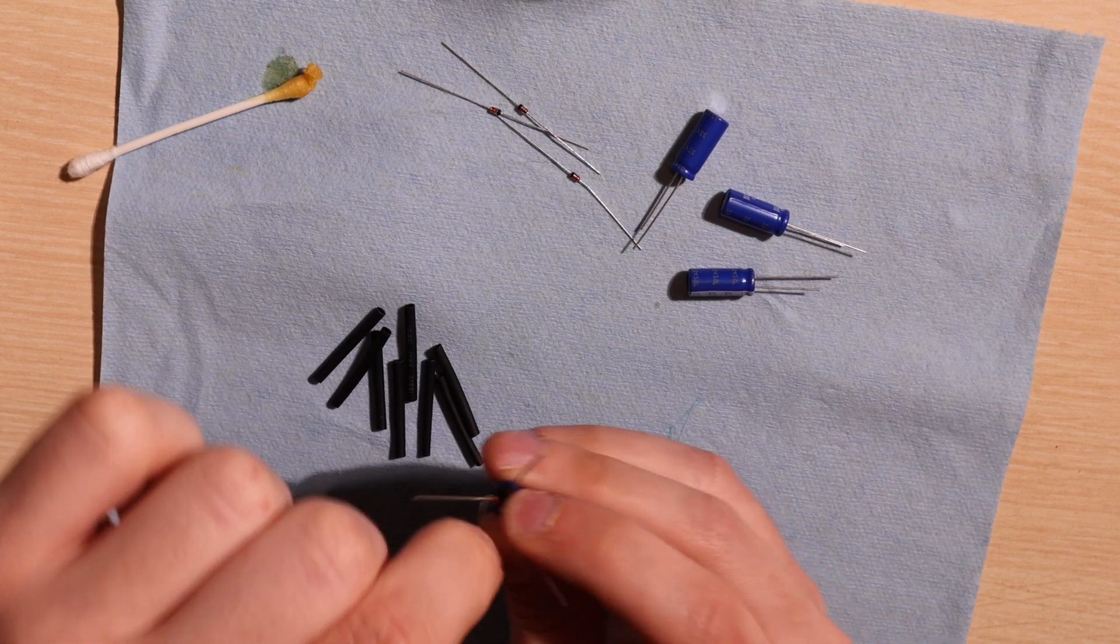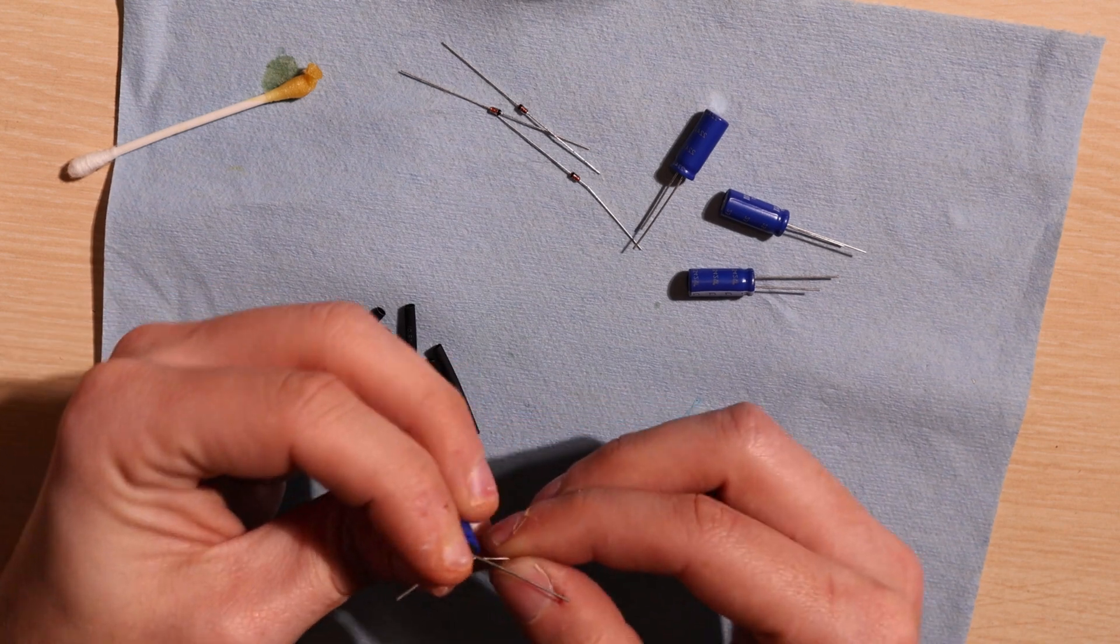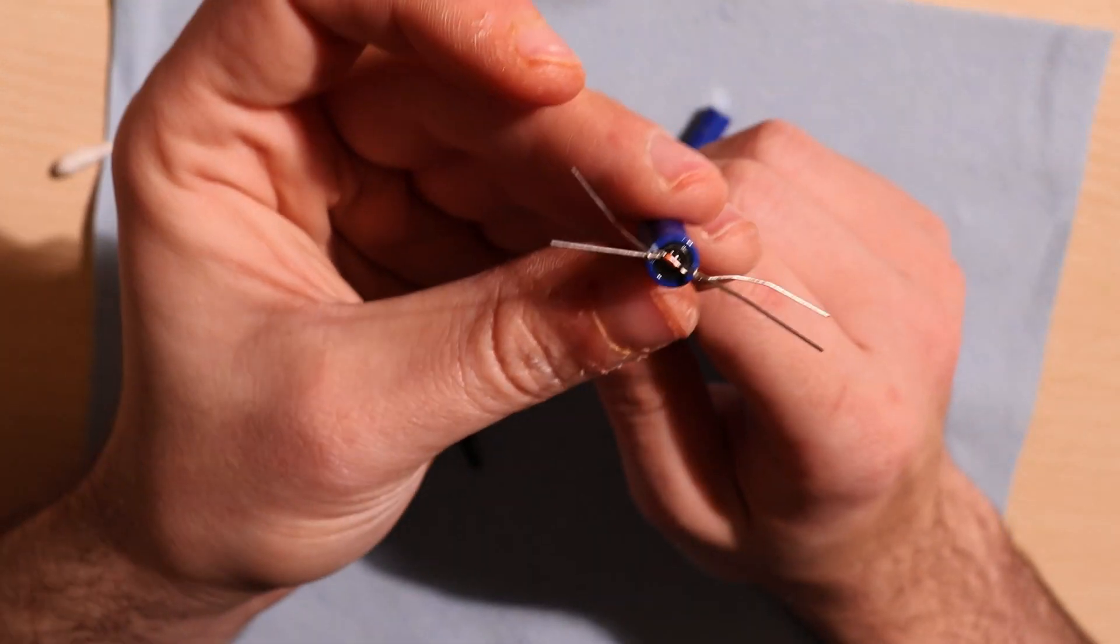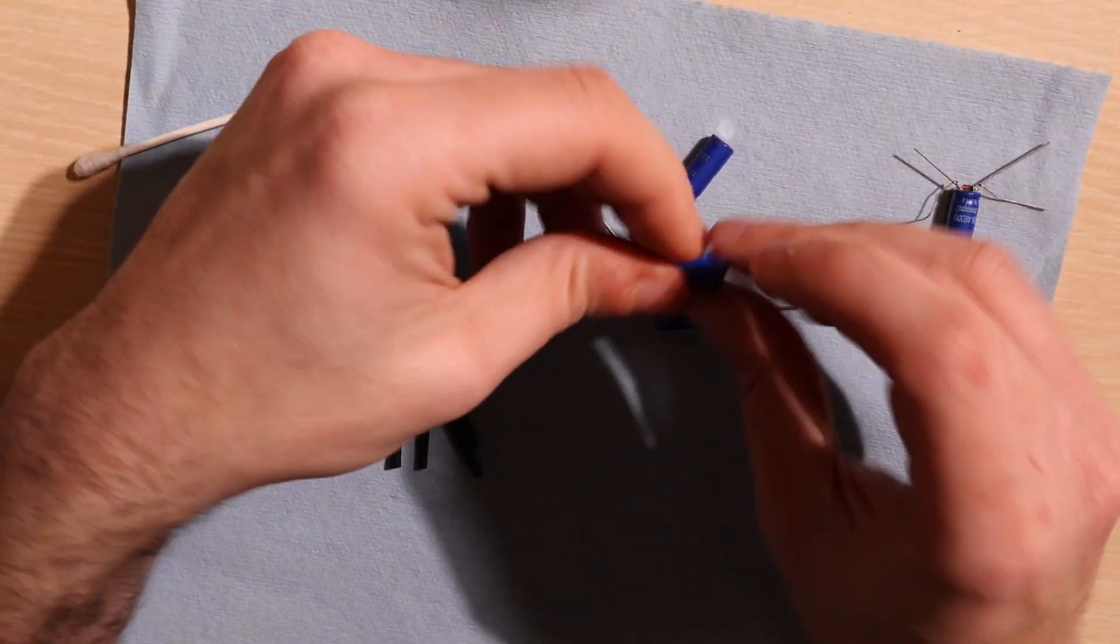So the black band is going to be facing towards the larger pin of the capacitor. Then twist the diode onto the pins so they stay in place. We'll do it now for the other three capacitors and diodes.